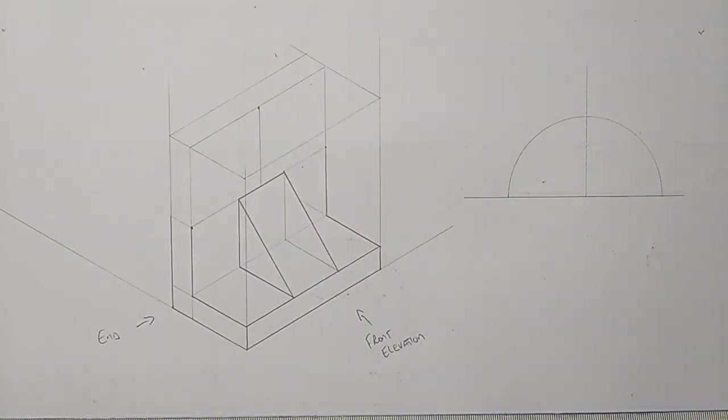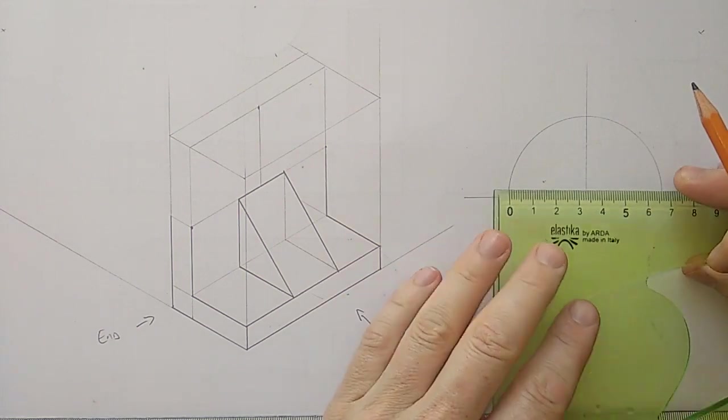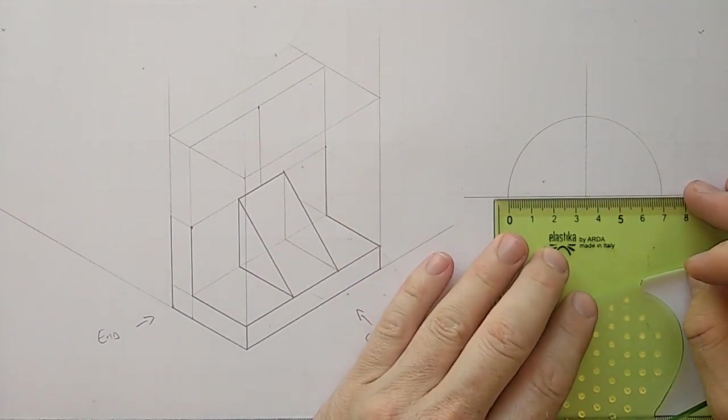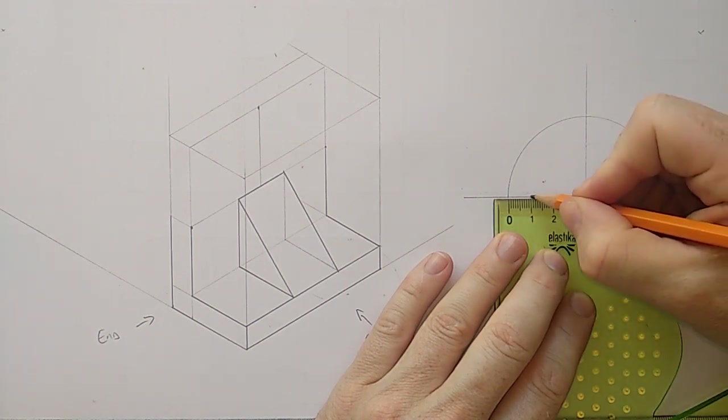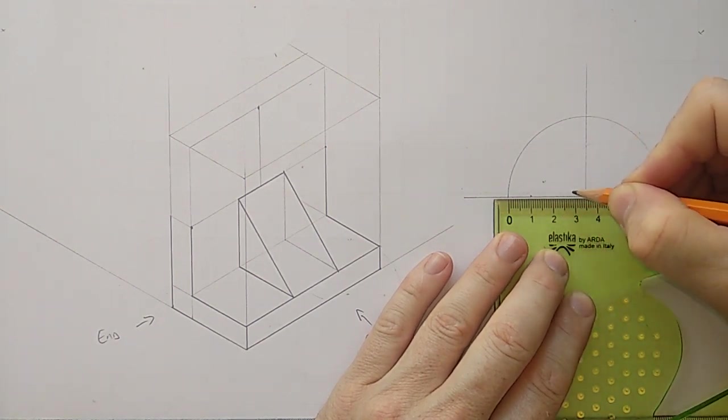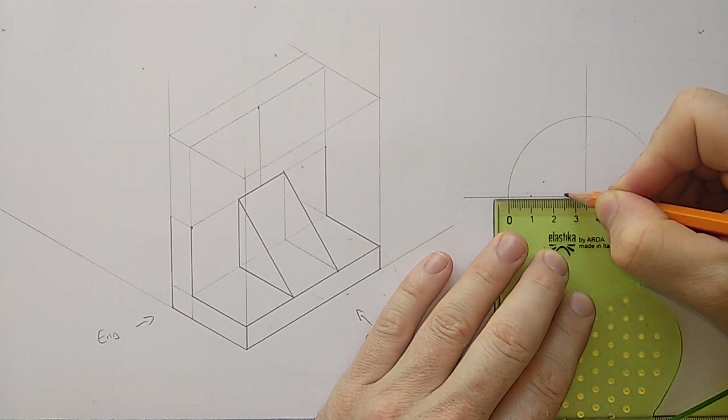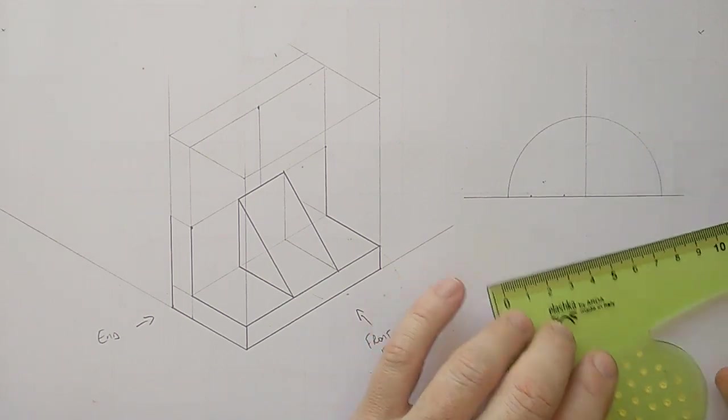Now, you can use your 60, 30, but sometimes I find it's a bit easier to just divide up the lines. So we have 35 here. So let's take a point there at 10, and another one at 20.